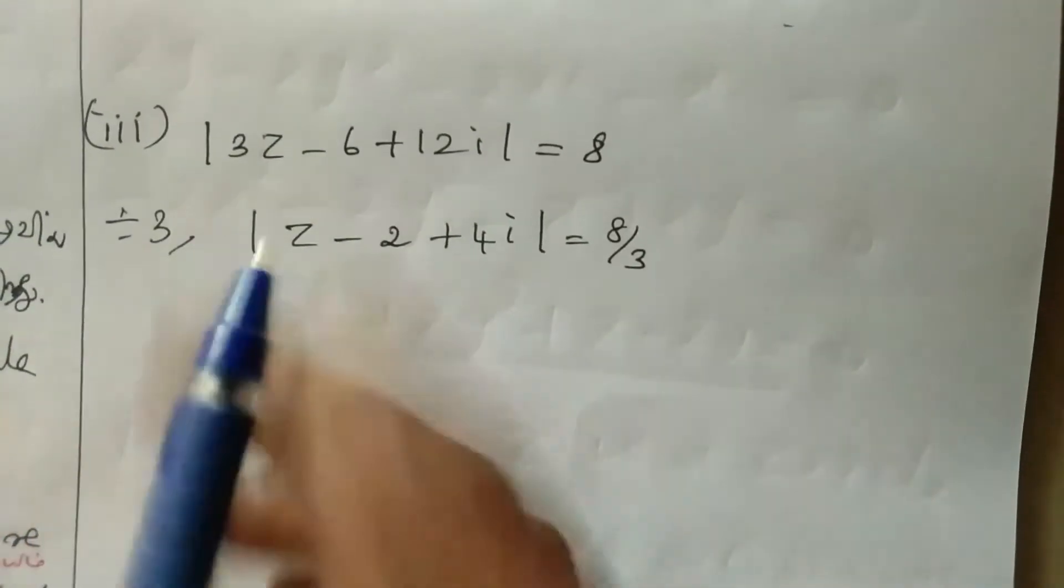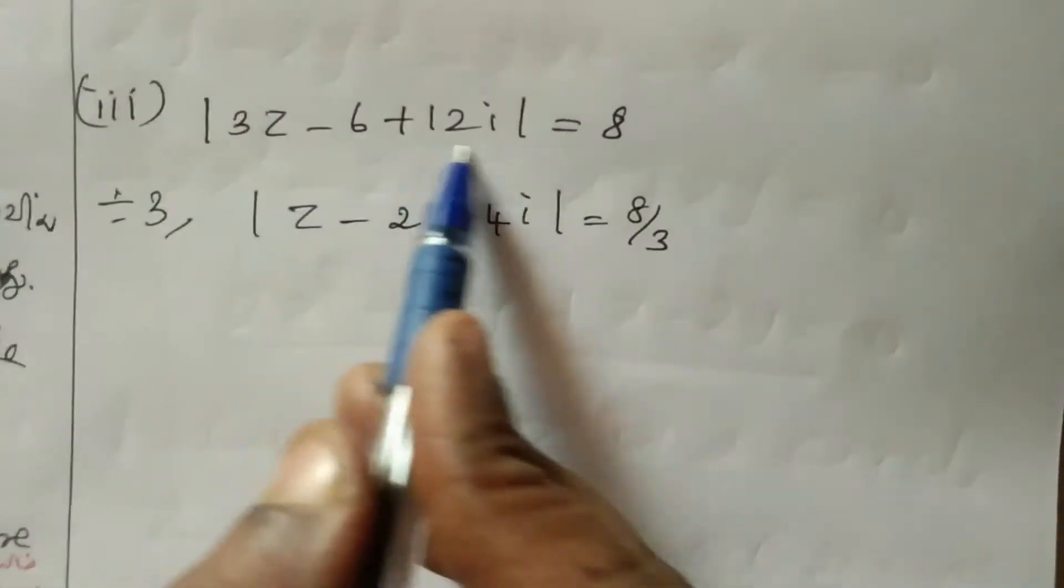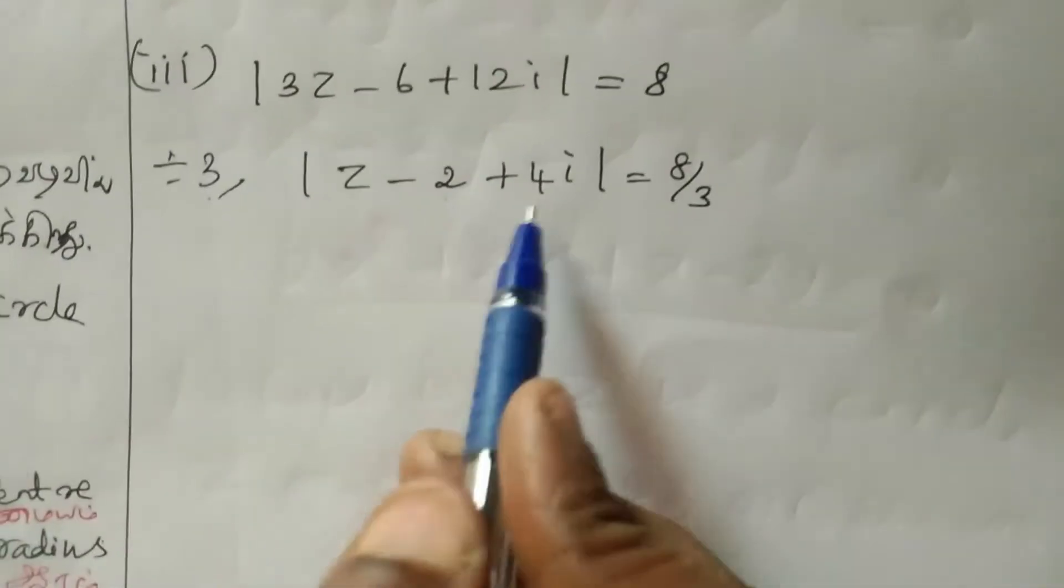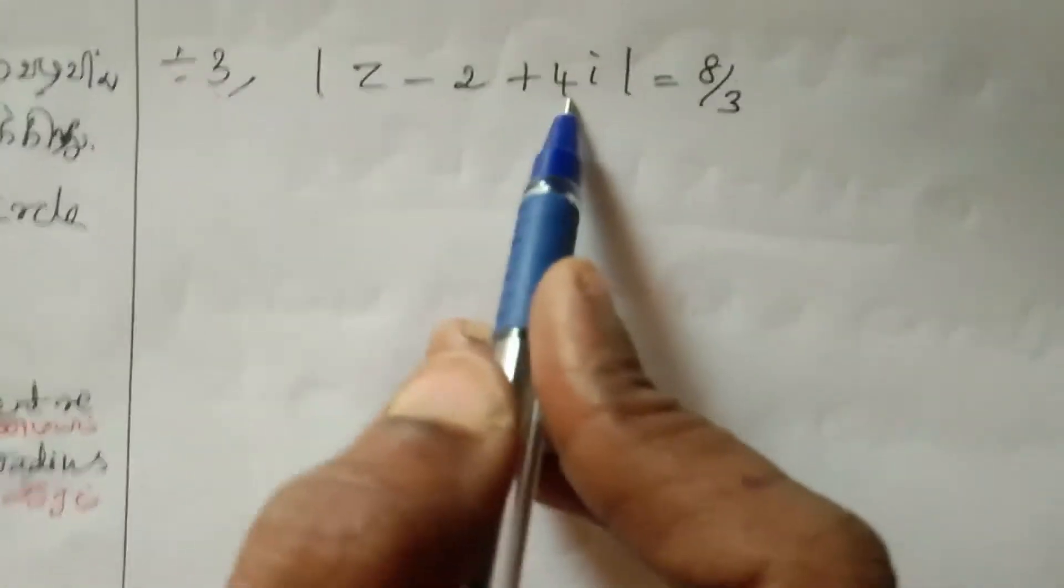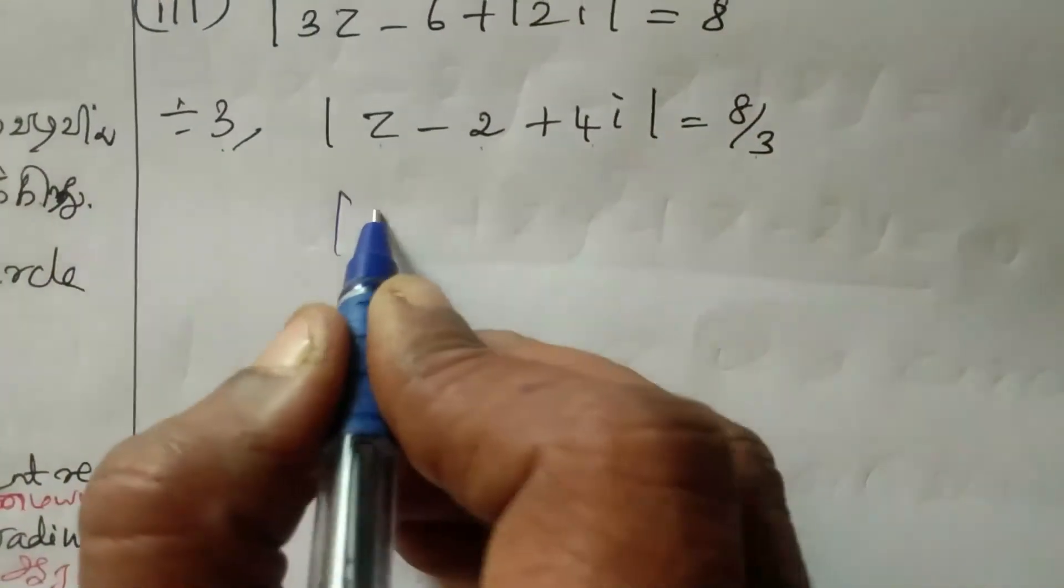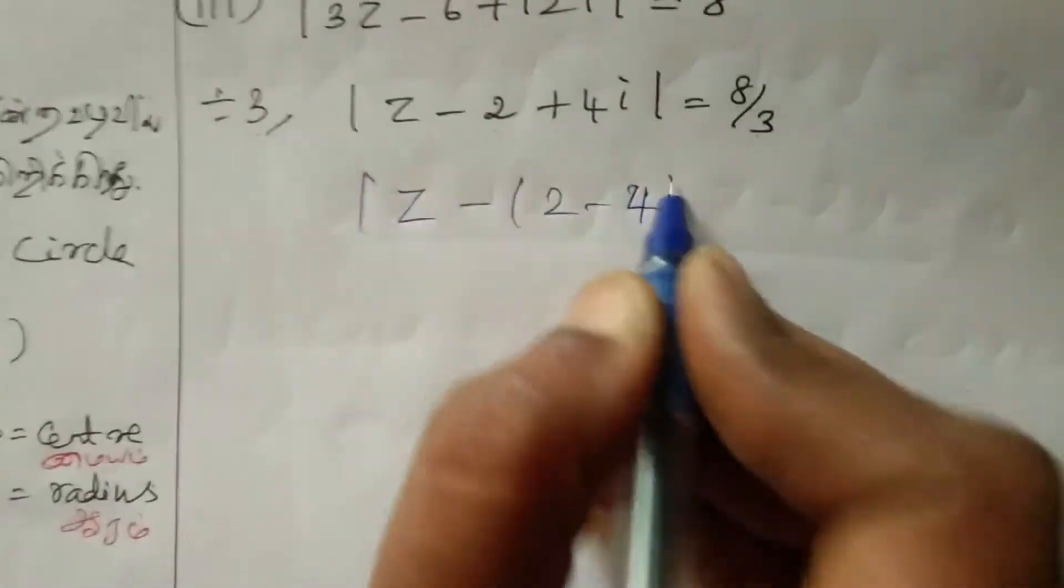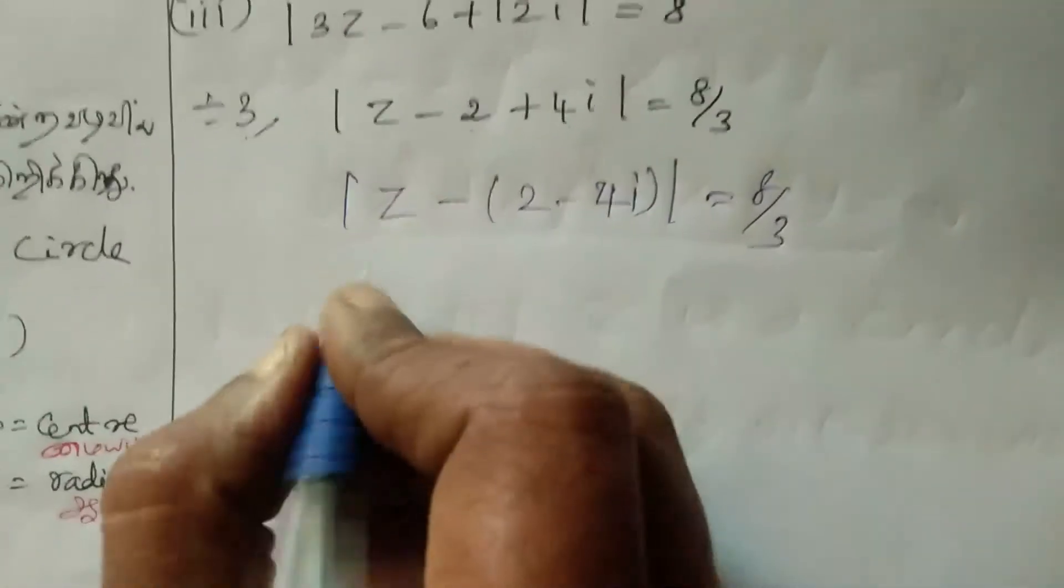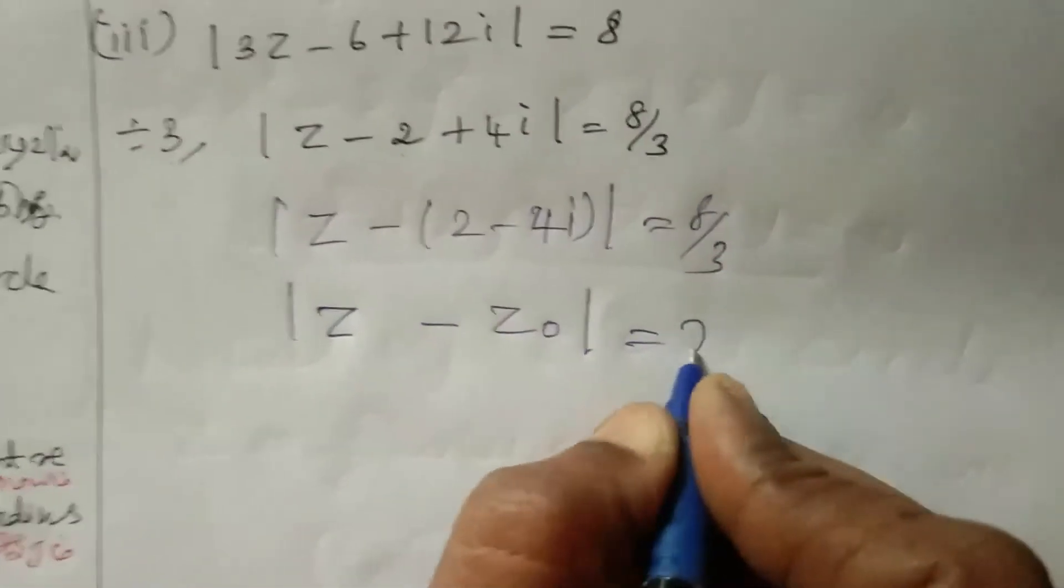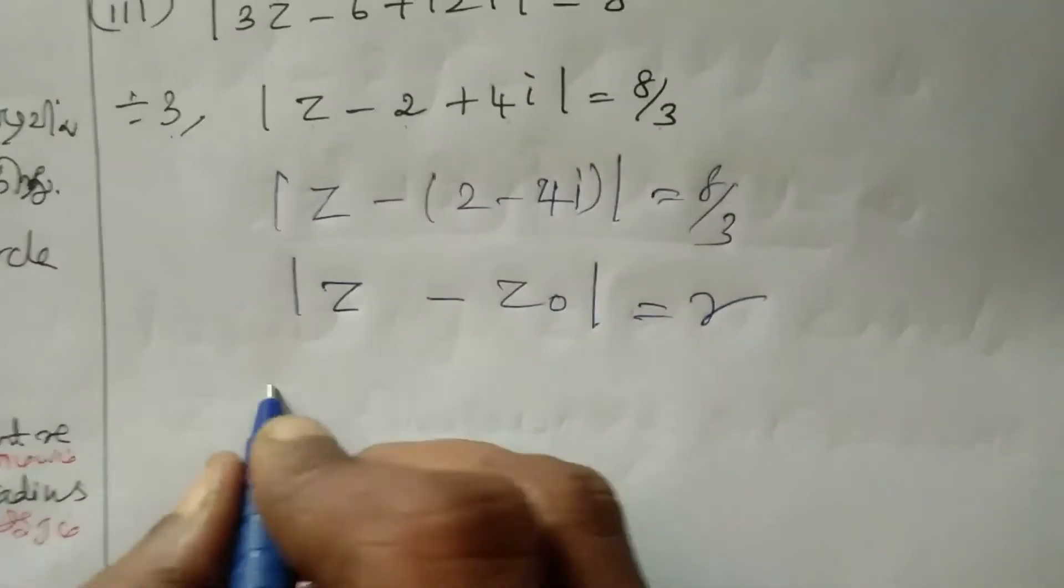Modulus of 3Z minus 6 plus 2I equal to 8. Take out 3: 3 times modulus of Z minus 2 plus 2I over 3 equal to 8. Divide by 3: modulus of Z minus 2 plus 4I equal to 8 by 3. From Z minus Z not equal to R, this represents a circle.